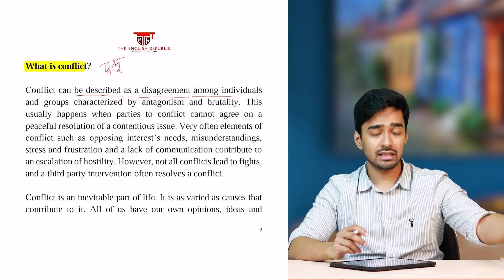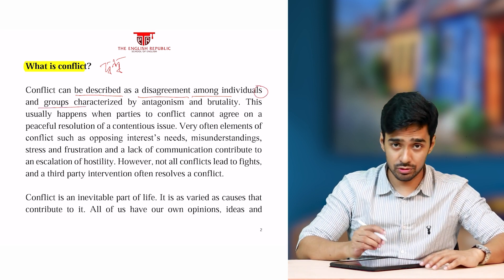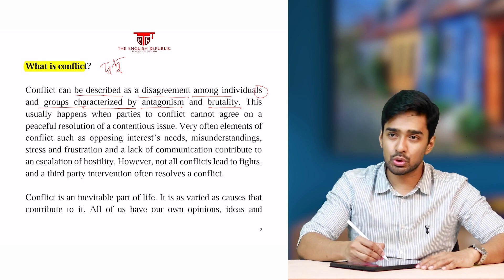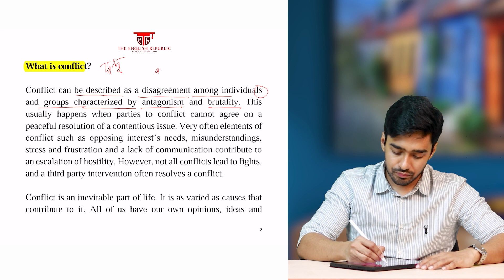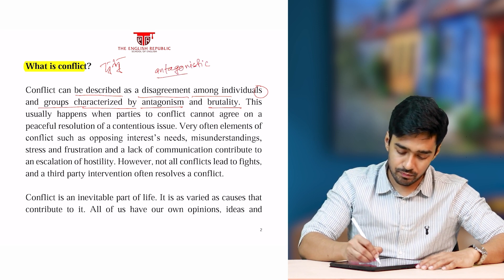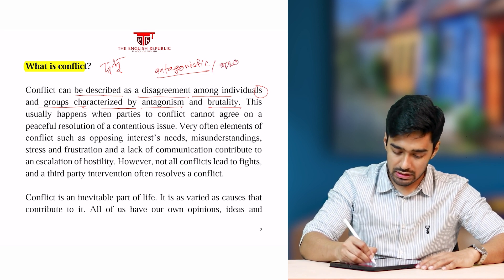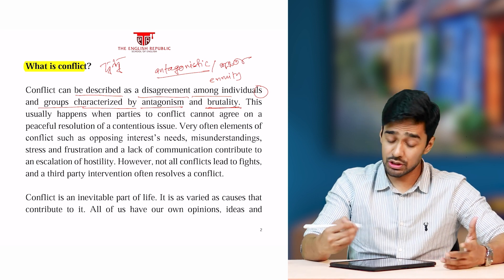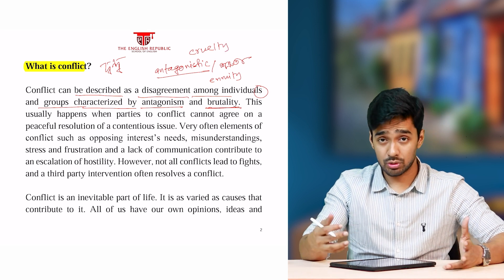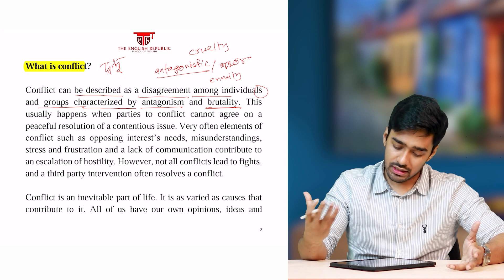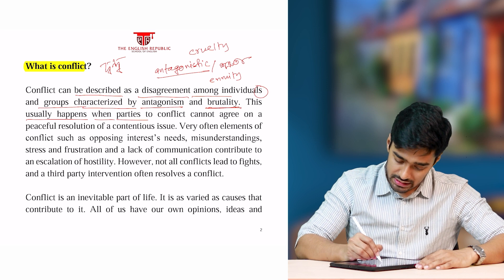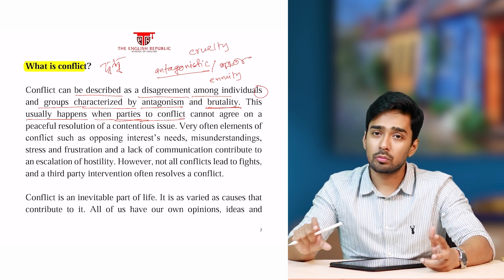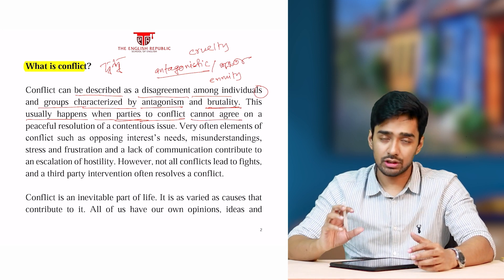An individual — to me, actually, individual means a single person; he is an individual, she is an individual; plural is individuals. Conflict can happen between individuals or groups. Characterized by antagonism and brutality — antagonism means enmity (শত্রুতা, বৈরিতা, বৈরিভাব); so antagonistic is the adjective form. Brutality means নিষ্ঠুরতা — a synonym of cruelty. Cruel, brutal — these are synonyms.